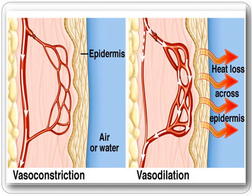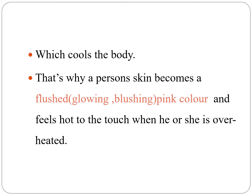In this figure, two processes — overheating and over-cooling — are shown. In the process of overheating, viso-dilation occurs: expansion of blood vessels and heat loss across the epidermis, which cools the body. That is why a person's skin becomes flushed, glowing and blushing, pink in color, and feels hot to the touch when he or she is overheated.